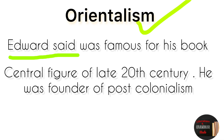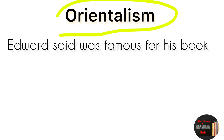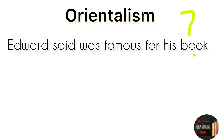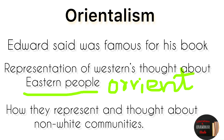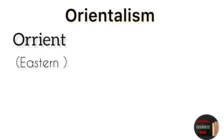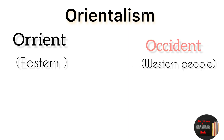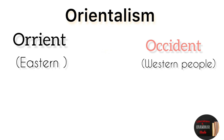Edward Said's book Orientalism is mainly about the representation of Western thoughts about the Eastern people. The Eastern people are named the Orient — those who live in the East. The Western people who look at them are called the Occident.